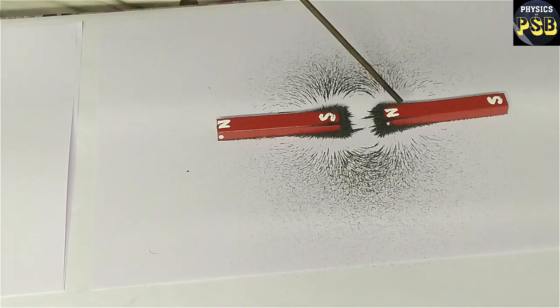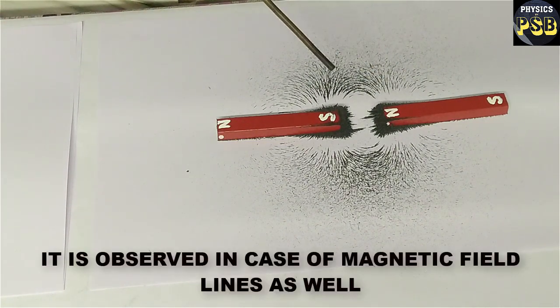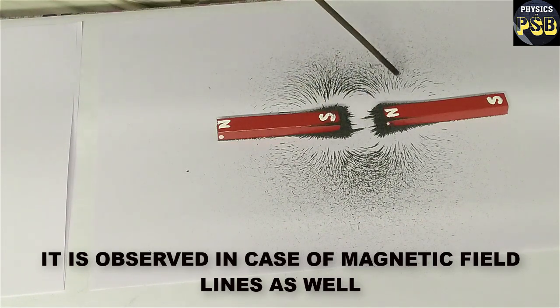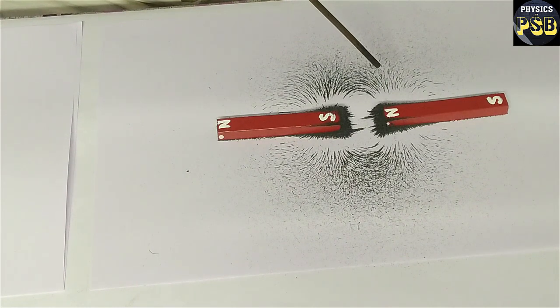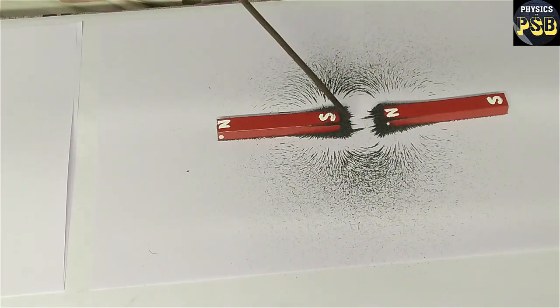You can see, when north pole of a magnet is brought near the south pole of another magnet, they attract each other. The magnetic field lines are observed to be coming close to each other. This shows the attraction between unlike poles.